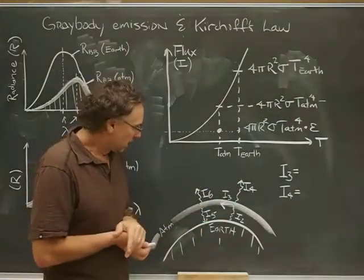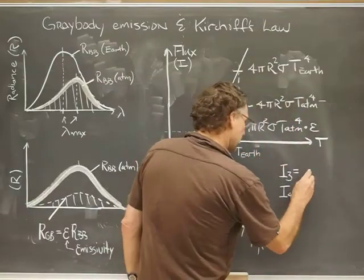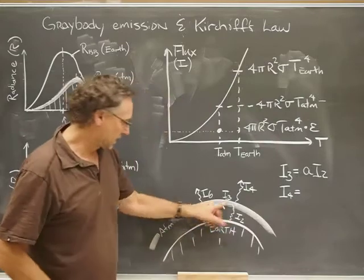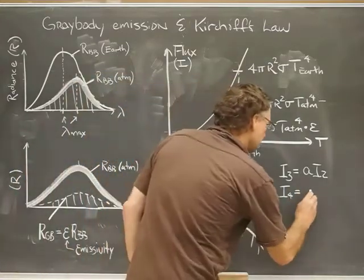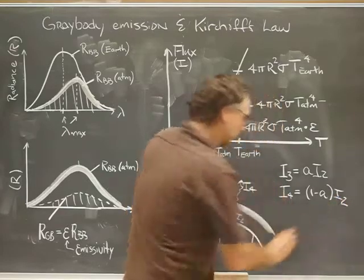And some fraction, let's say 1 minus A, gets passed through and lost to space. So I would say that must be A times I2. That is I3, that's how much gets absorbed. And that must be 1 minus A times I2.